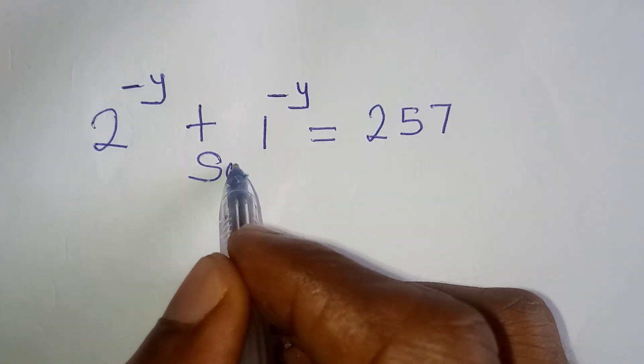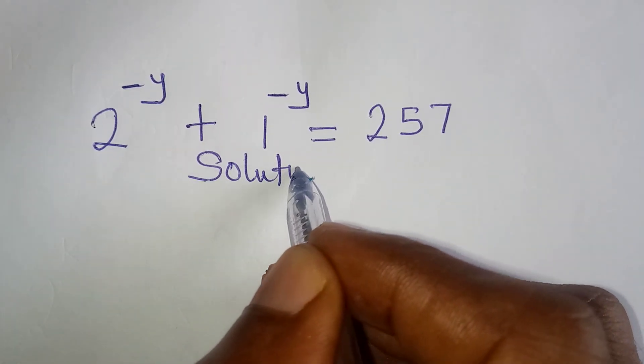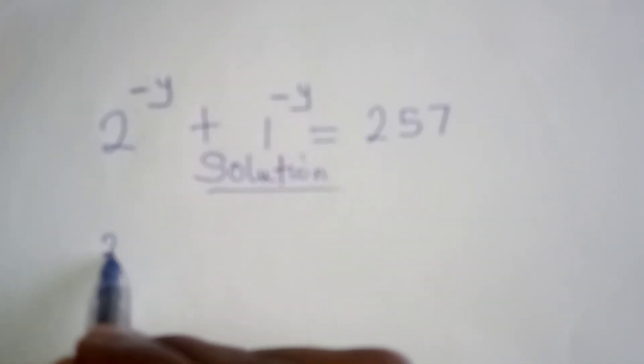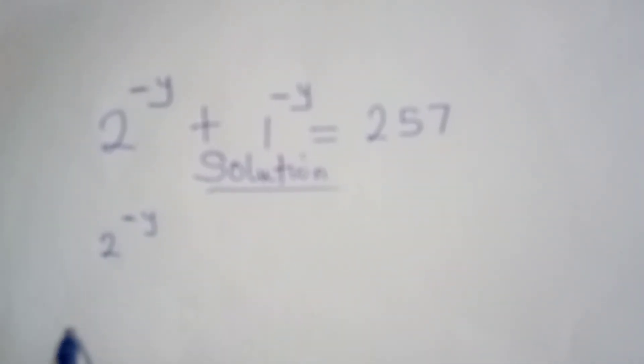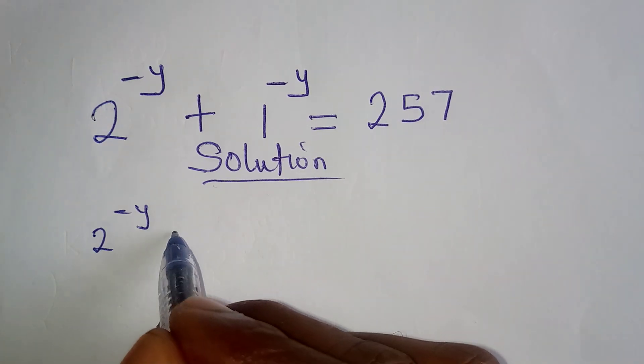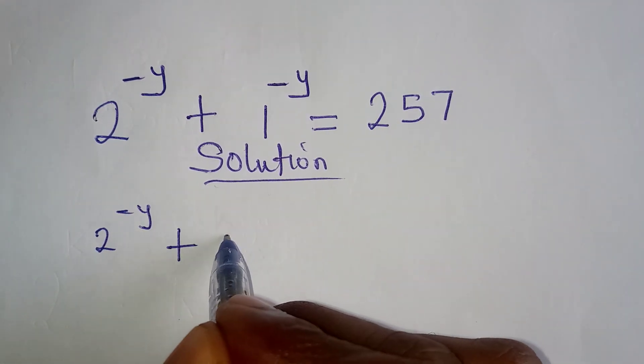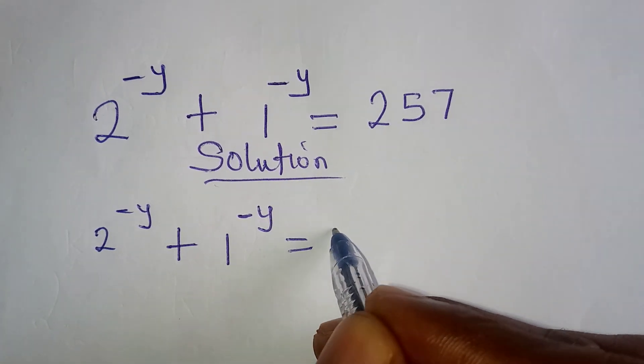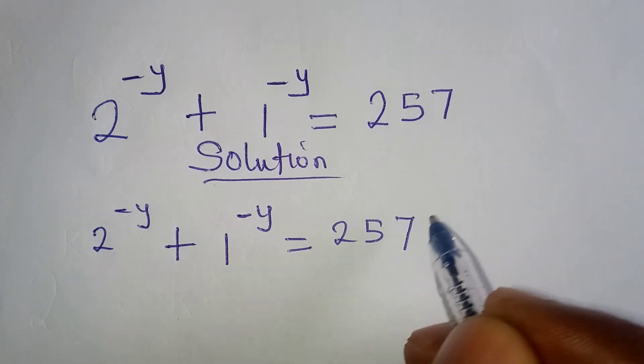Hello everyone. Let's answer this question quickly. We have 2 to the power of negative y plus 1 to the power of negative y equals 257.